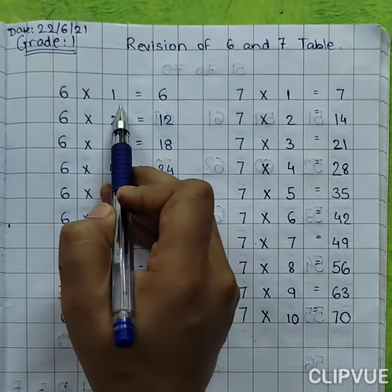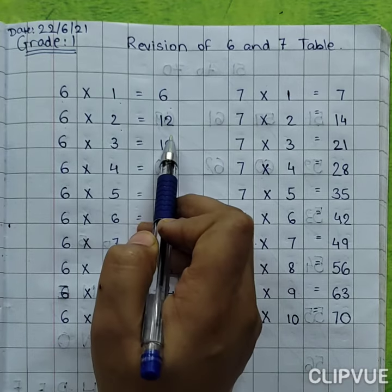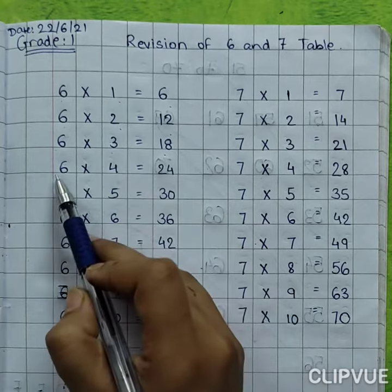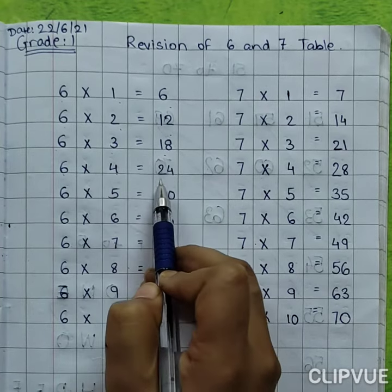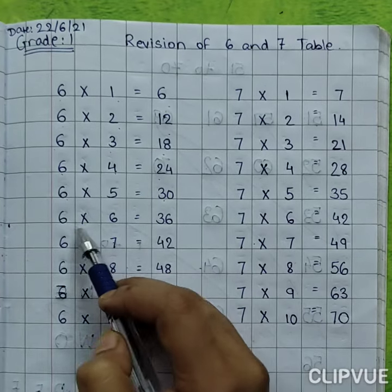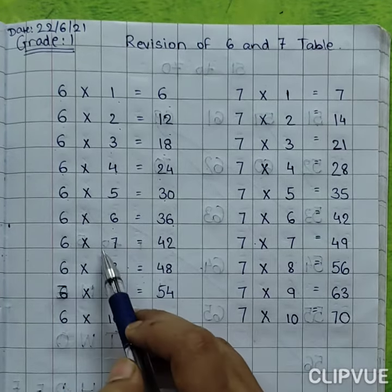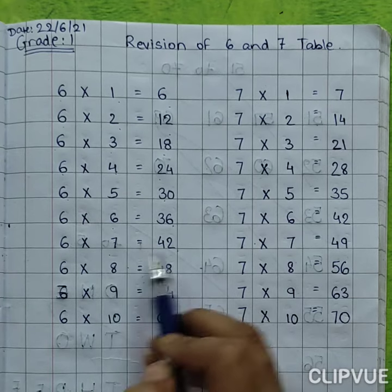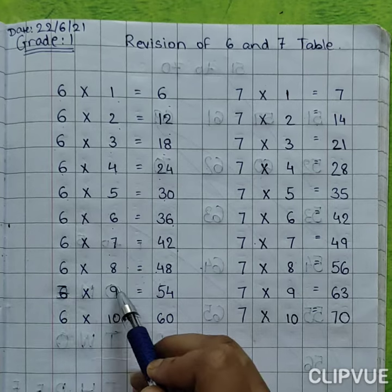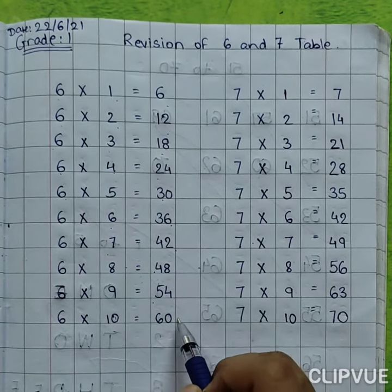6 1s are 6, 6 2s are 12, 6 3s are 18, 6 4s are 24, 6 5s are 30, 6 6s are 36, 6 7s are 42, 6 8s are 48, 6 9s are 54, 6 10s are 60.